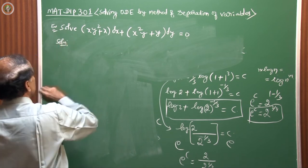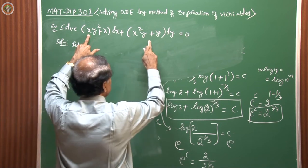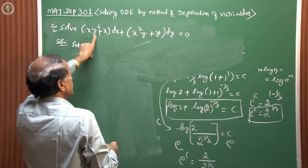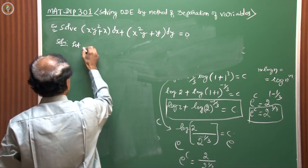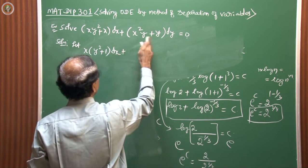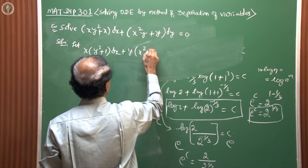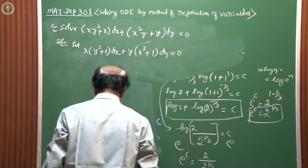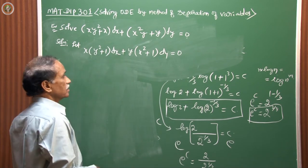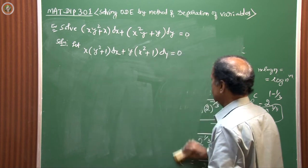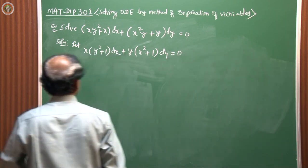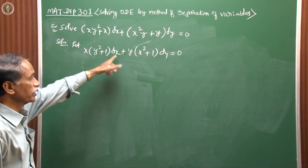In both brackets, there is a common symbol. From the first bracket, take x outside; from the second bracket, take y outside. This gives: x(y² + 1)dx + y(x² + 1)dy = 0. Now it is in product form — convenient to apply separation of variables, since the distributed form has been reduced to product form.